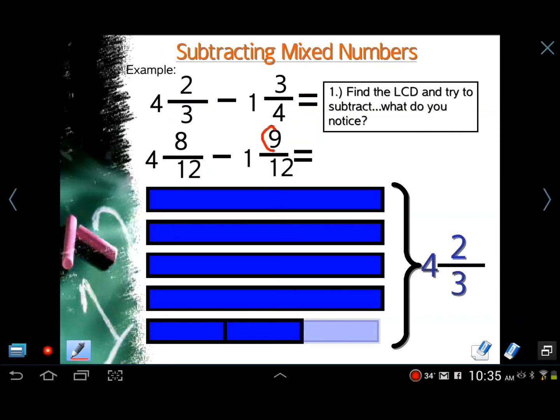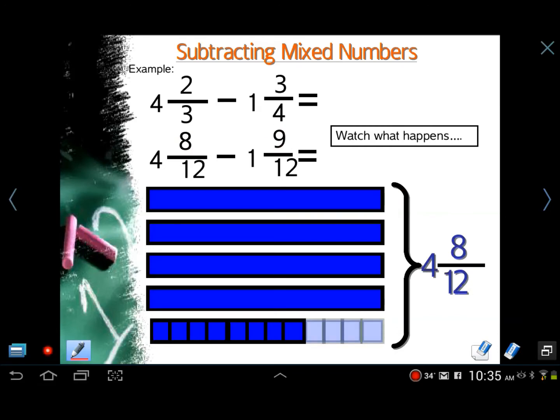We cannot take nine away from eight. And here's my model. I have in this model four whole numbers, four whole number strips, and we have two thirds of a whole. So if I try to take away nine twelfths from that, that's not going to work. So I'm going to make it match up with my common denominator. Four and eight twelfths. That's what all this is right here. One, two, three, four. And that's eight twelfths right there.